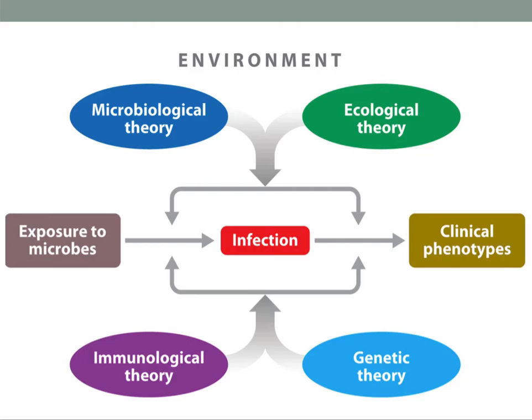By concentrating on these three theories we do not mean to underplay the importance of the ecological theory, as neatly illustrated by the impact of dual infection. However, we will mostly focus on microbiological and immunological theories. On the picture you see all four complementary theories of infectious diseases. In principle, inter-individual variability of clinical presentation ranging from asymptomatic to lethal infection in infected individuals can depend on four sets of overlapping forces corresponding to the microbiological, ecological, immunological, and genetic theories.